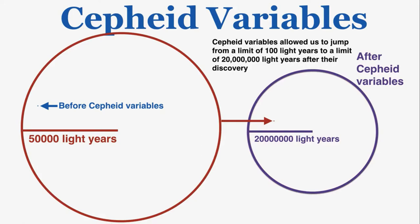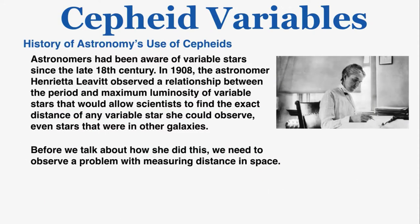This gigantic step was made possible by a pattern observed by an astronomer in 1908. Astronomers had been aware of variable stars since the late 18th century, but in 1908 the astronomer Henrietta Leavitt observed a relationship between the period and maximum luminosity of variable stars that would allow scientists to find the exact distance of any variable star she could observe, even stars in other galaxies.